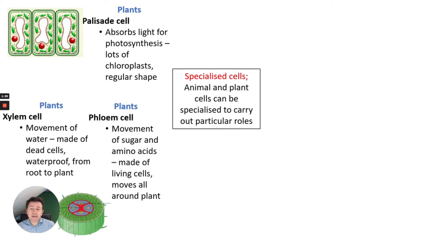Other plant cells you've got are xylem cells and phloem cells. Xylem cells move water and are made of dead cells. They're waterproof and go from the root right through the stem to the leaf and transport water up the plant.